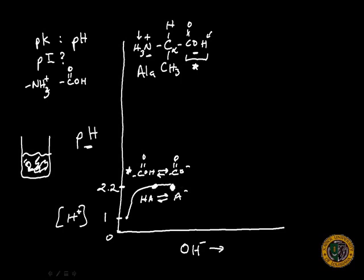Now if we continue to add base to this solution, as we continue to do that, the pH will begin to go up again. And it's because we have gone beyond the equilibrium of the acid and conjugate base. Now it's all in the form of this conjugate base.